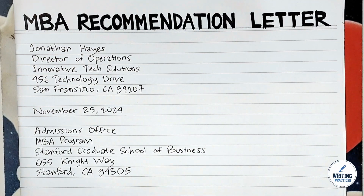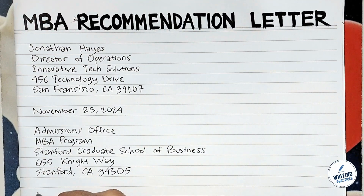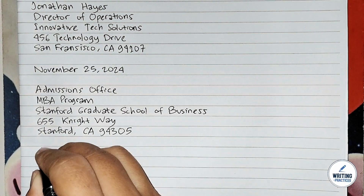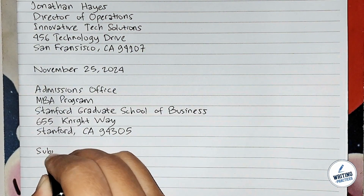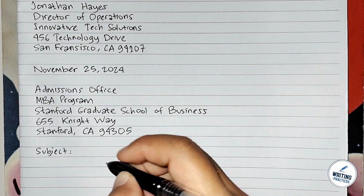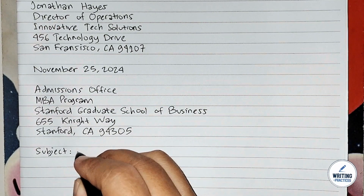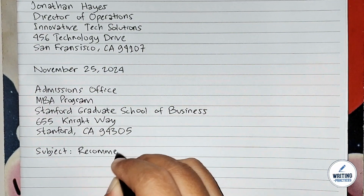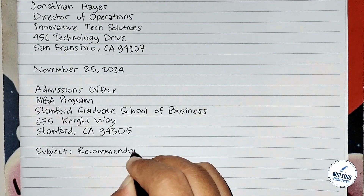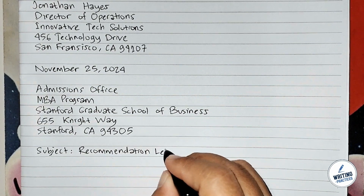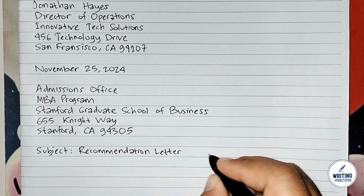Under it, write the name of the institution — in this example, it is Stanford Graduate School of Business. Don't forget to write also the full address of the institution, mentioning the number, street name, city, state, and zip code.